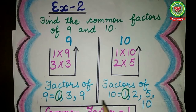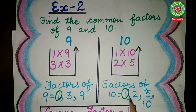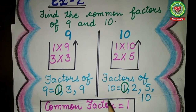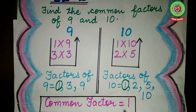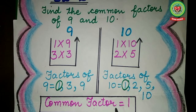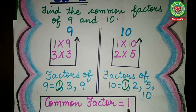Now I have to find common factors. Students, there is only one factor that is common in both — that is 1. So common factor is equal to 1. Students, you can see I have not written 'common factors' — I have written 'common factor', because only one factor is common. So we write common factor is equal to 1. If more than one factor is common, we will write 'common factors'.